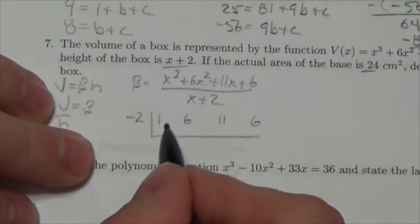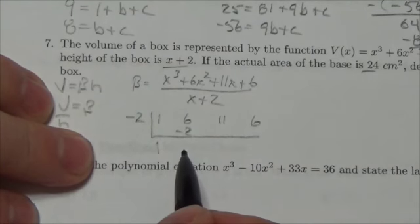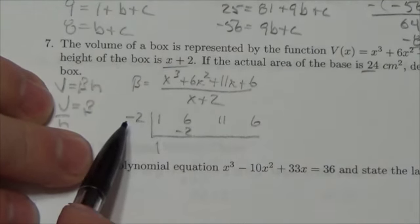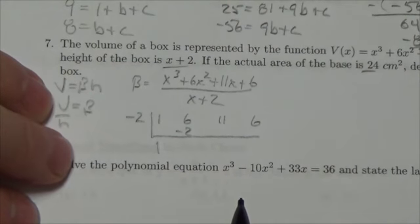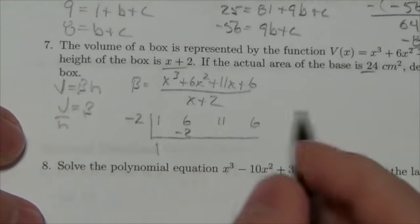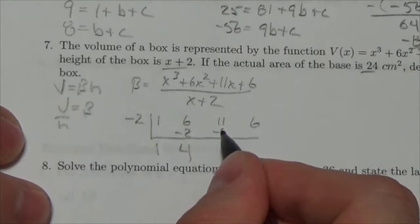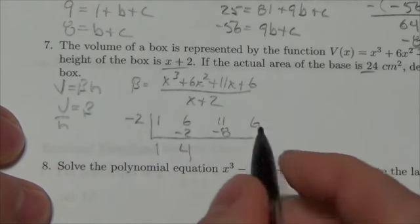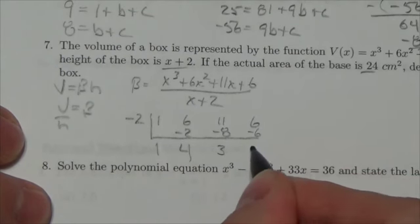So now I'm going to bring down the 1, multiply by negative 2, and then I add. If you put a positive 2 out front here, then you just have to subtract. That's the only difference. So it's really just a preference thing. So, 6 and negative 2 is going to be 4. Multiply by the negative 2, we're going to get negative 8. 11 and negative 8 is going to be 3. Negative 2 times 3 is going to be negative 6. And when I add, I get 0.